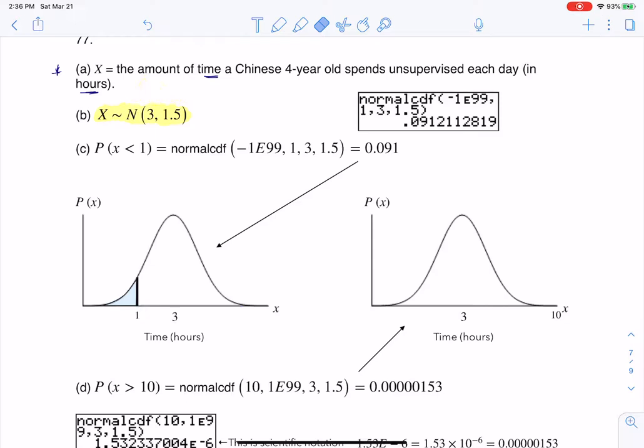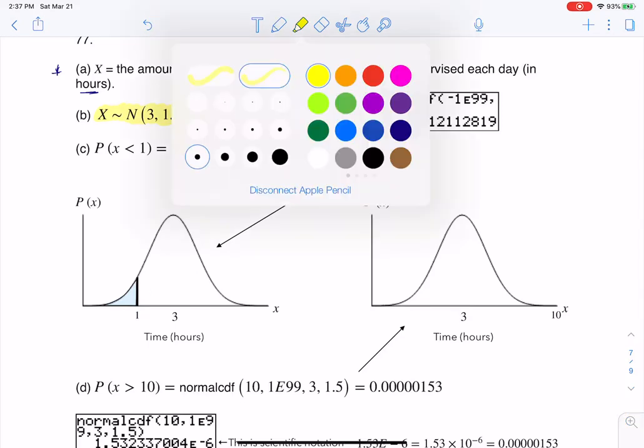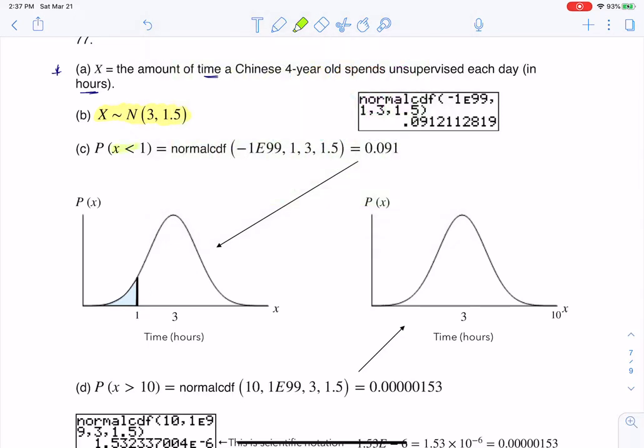So moving through here, the first probability they ask us to calculate is what's the probability that a child spends less than one day unsupervised. So I'm going to take that less than one and write it as x less than one. I'm going to find one on the x-axis, and because I'm less than, I'm going to go left. I'm going to have a low of negative infinity and a high of one. So that's where you see low, high, and then mean standard deviation.